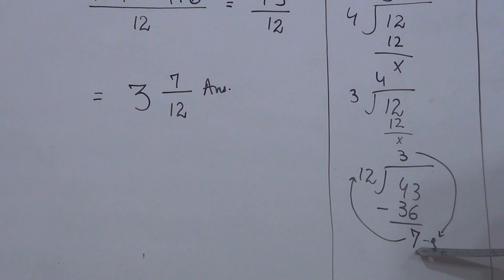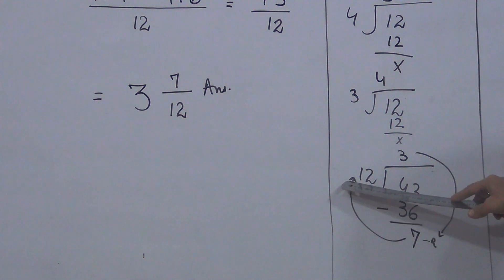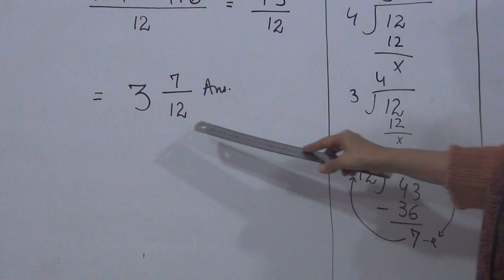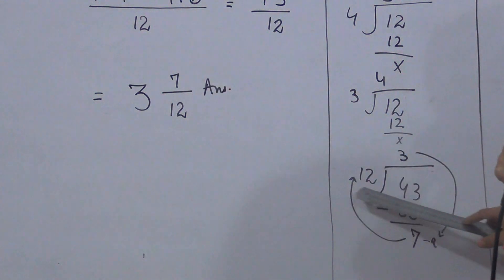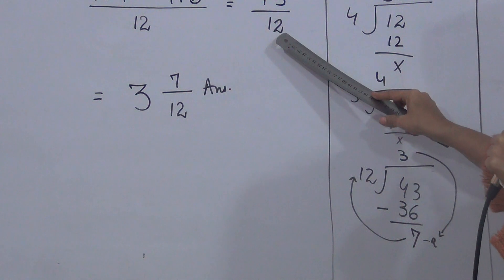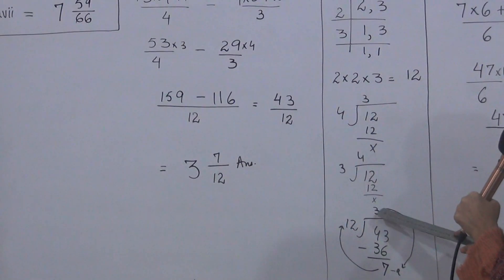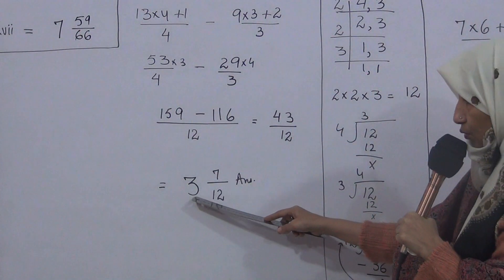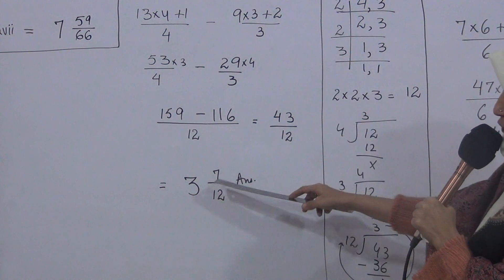We learned how to write mixed numbers in Exercise 2. The quotient becomes the whole number, and the remainder goes over the denominator. The answer is 3 whole number 7 upon 12 — that is the final answer.